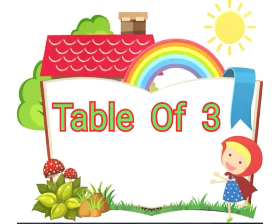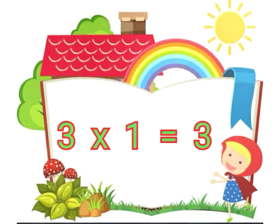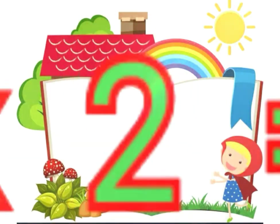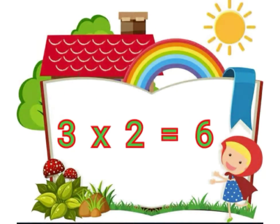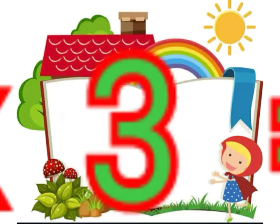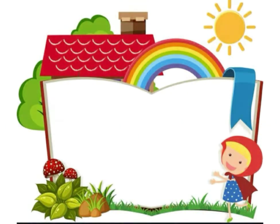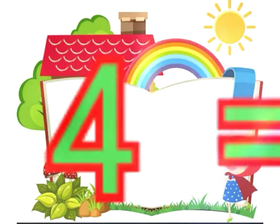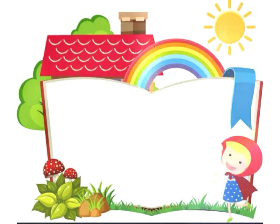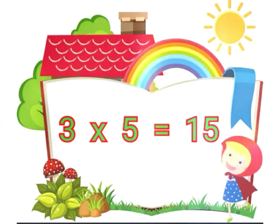Table of 3. 3 1's are 3. 3 2's are 6. 3 3's are 9. 3 4's are 12. 3 5's are 15.